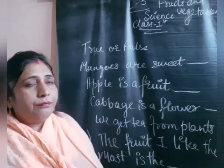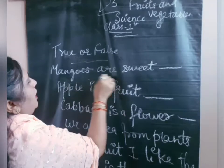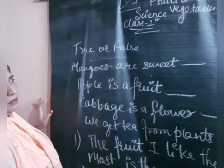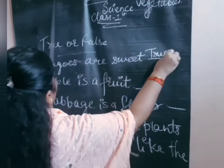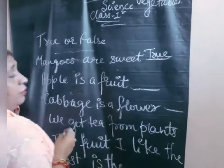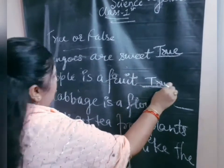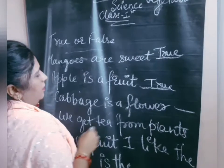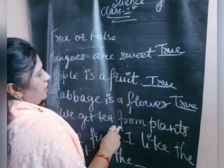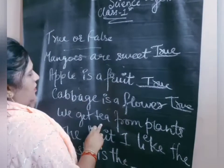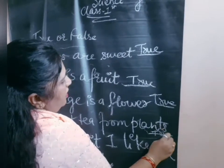Now come to the section: True or False. Mangoes are sweet — yes, mangoes are sweet and juicy, so that is true. Apple is a fruit — yes, true. Cauliflower is a flower — true. We get tea from plants — true.